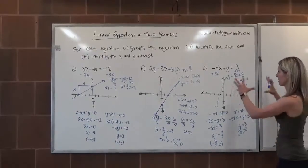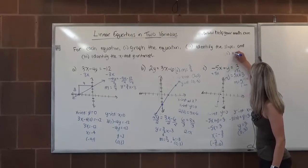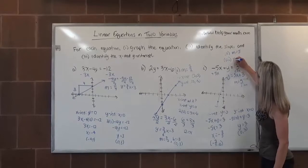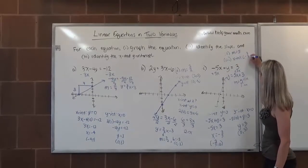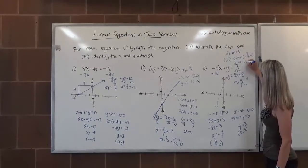So to reiterate, we want to put everything together. Part 2 asked for the slope, so we're going to say the slope is 5. Part 3 asked for the intercepts. So we're going to say the x-intercept is negative 3 fifths, 0, and the y-intercept is 0, 3.